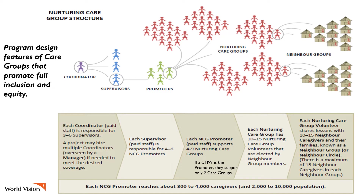Let's begin by talking about what the Care Group approach looks like and what happens during its use. With the Care Group model, you start with a census which targets all households with a beneficiary, such as pregnant lactating women and children under age two or age five. There's flexibility on which households are included. This is World Vision's model, which we call Nurturing Care Groups, since they're used to promote behaviors from all five elements of the Nurturing Care Framework.